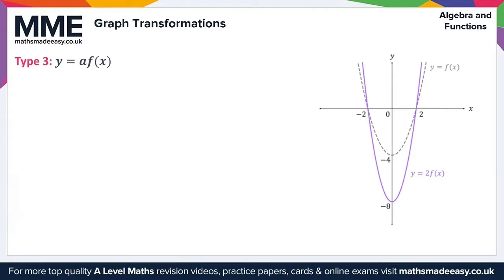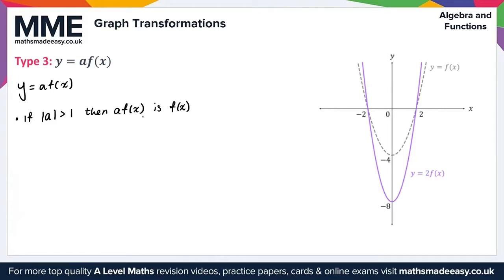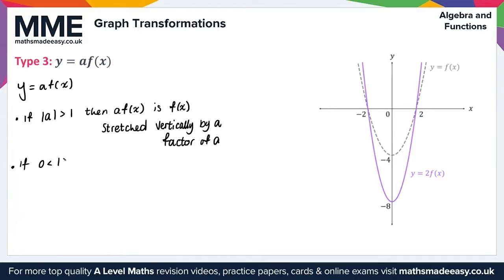Let's take a look at Type 3, which is of the form y equals a of f of x. For this transformation, if the absolute value of a is greater than 1, then a·f of x is f of x stretched vertically by a factor of a. If the absolute value of a is between 0 and 1, then f of x is squashed vertically.